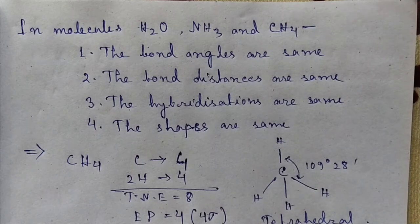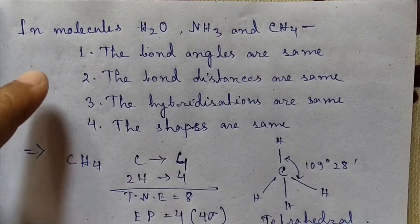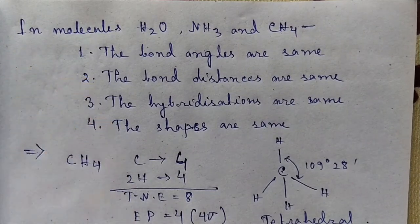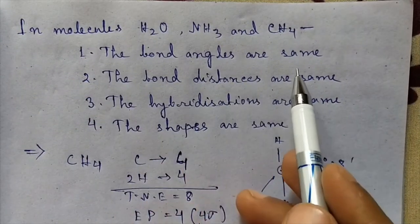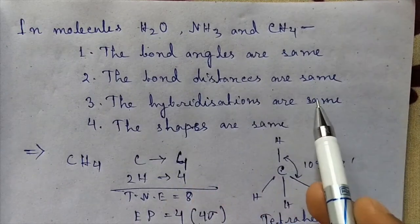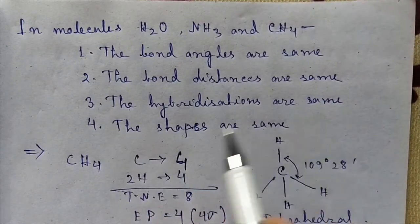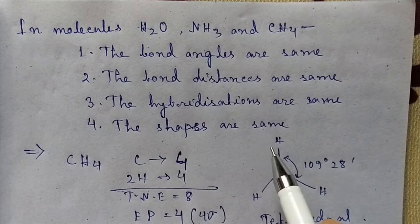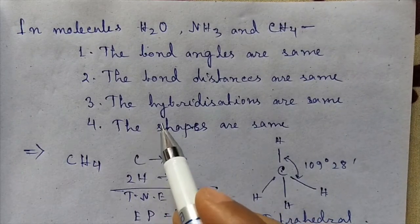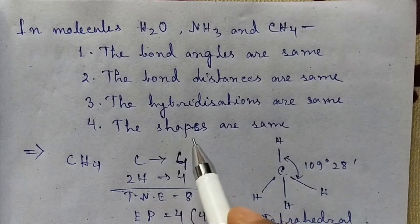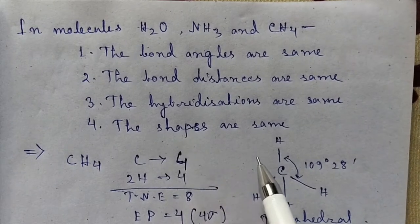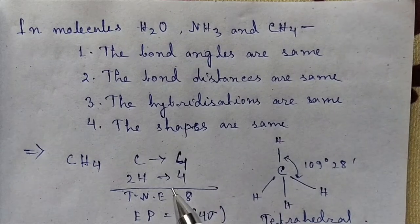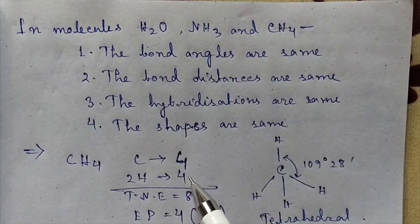Hello friends, today I am here with another interesting question. In molecules H₂O, NH₃, and CH₄, the bond angles are same, the bond distances are same, the hybridization are same, the shapes are same — which one will be the correct answer? This question actually came in UGC CSIR NET exam, so we'll try to answer this question.